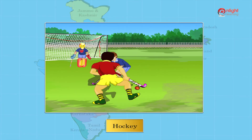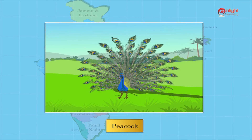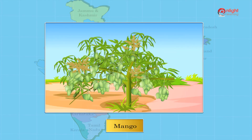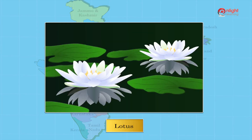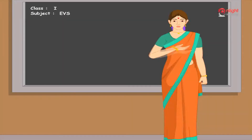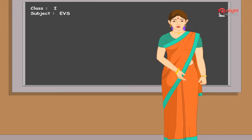Hockey is our national game. Peacock is our national bird. Mango is our national fruit. Tiger is our national animal. Lotus is our national flower.